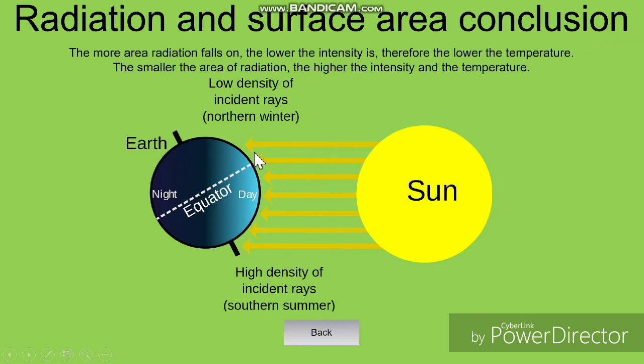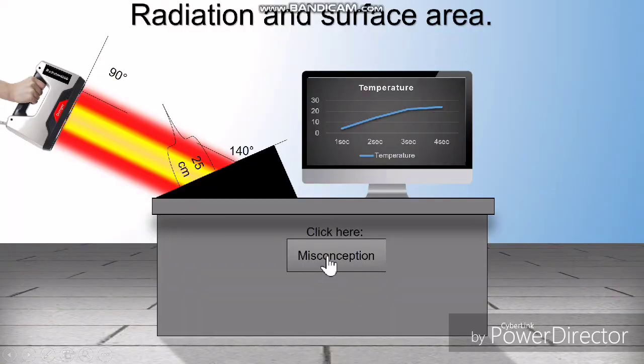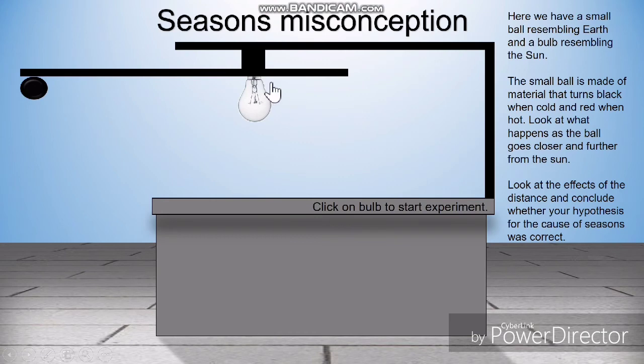That is the science behind this. Now, there is a big misconception that students have when it comes to seasons. One is that the Earth orbits the Sun but goes closer to the Sun during summer and further away from the Sun when it's winter.